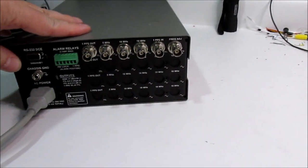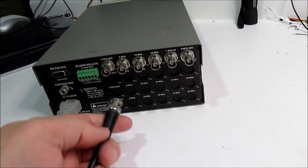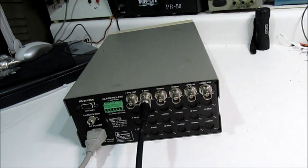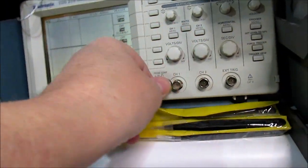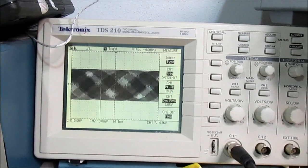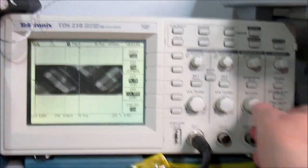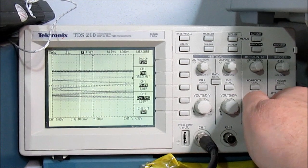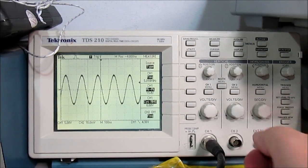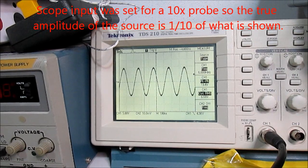All right, so we're gonna try out the outputs on this. Let's start with the five megahertz sine wave output. I'm gonna connect up a BNC cable here and I have a scope. Let's see what comes out of this. All right, so our scope is probably aliasing if that's the five megahertz sine wave output. Let's turn this up, yes it's aliasing. We're turning up the sweep speed.